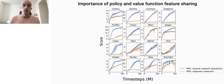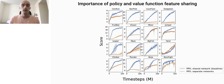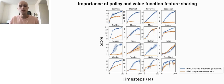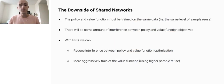In blue, we show the performance of our baseline agent, which is trained using a single shared network for policy and value function. In orange, we show an agent trained with disjoint policy and value function networks. As we can see, this agent in orange performs much worse. Because the policy and the value function are unable to share features, sample efficiency takes a big hit. So what, if anything, is the downside of sharing features?